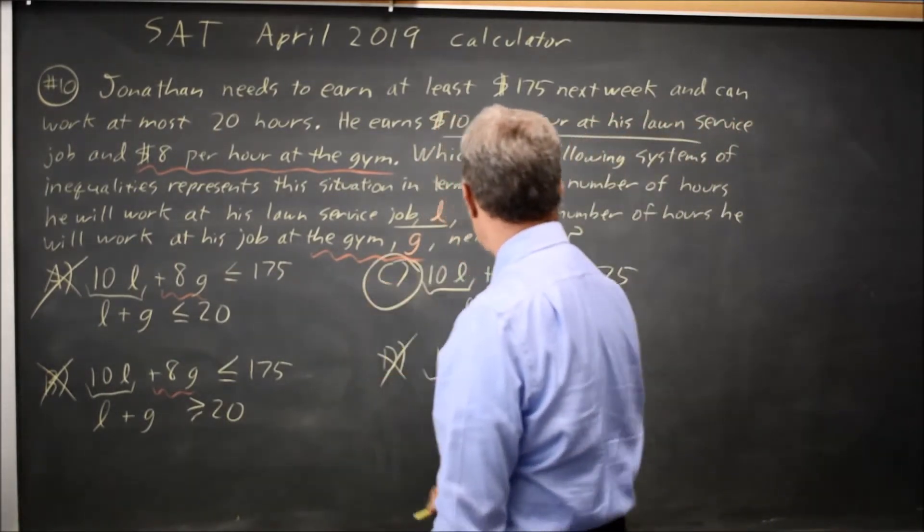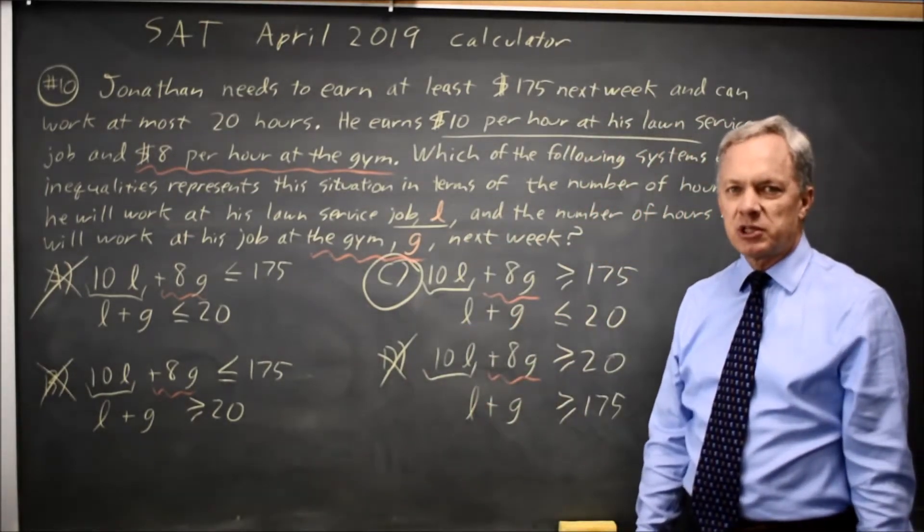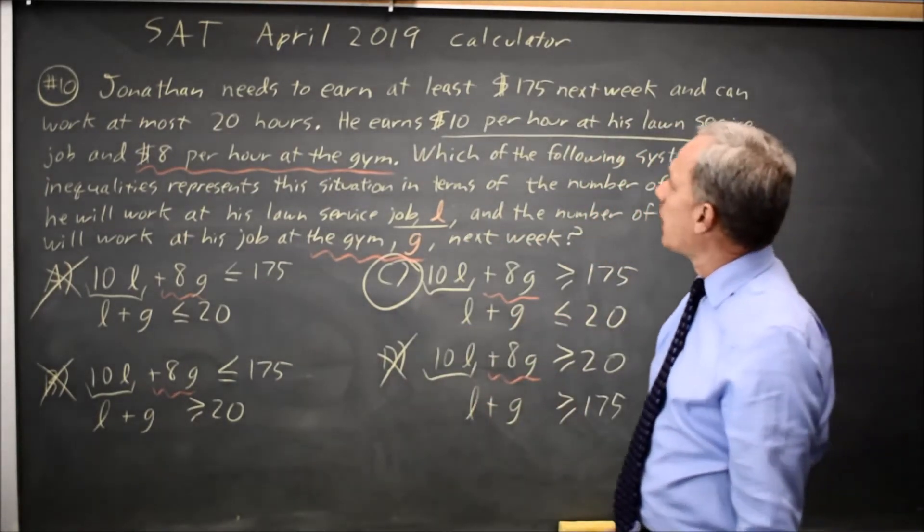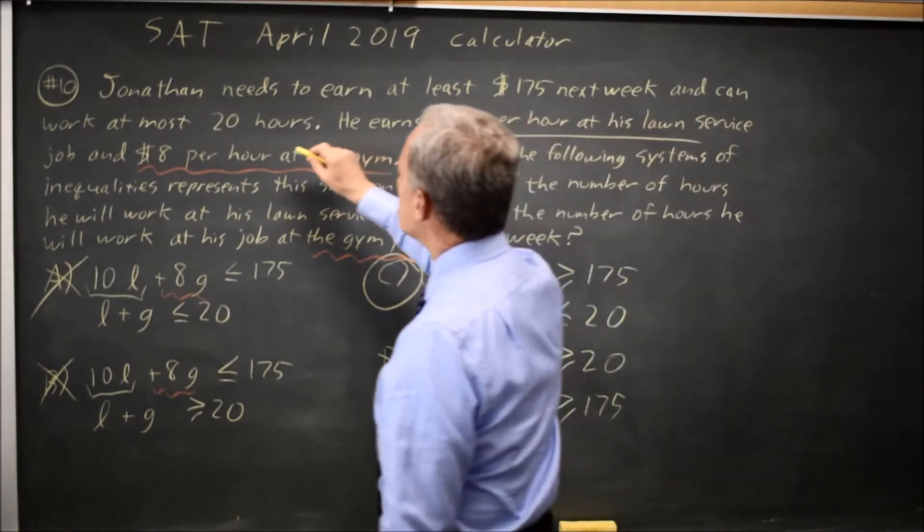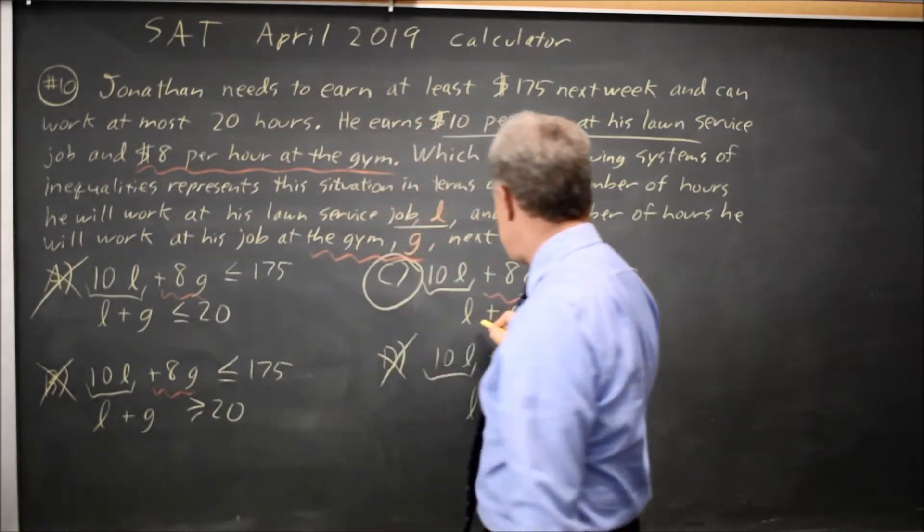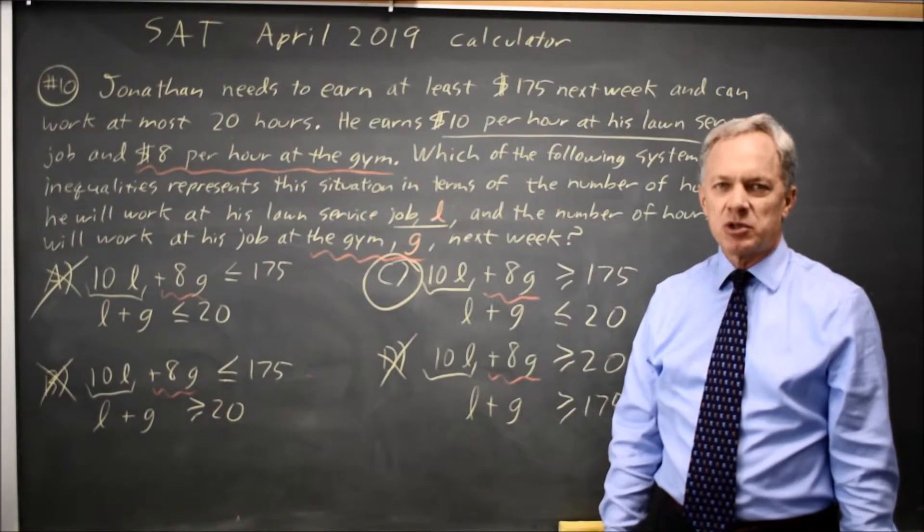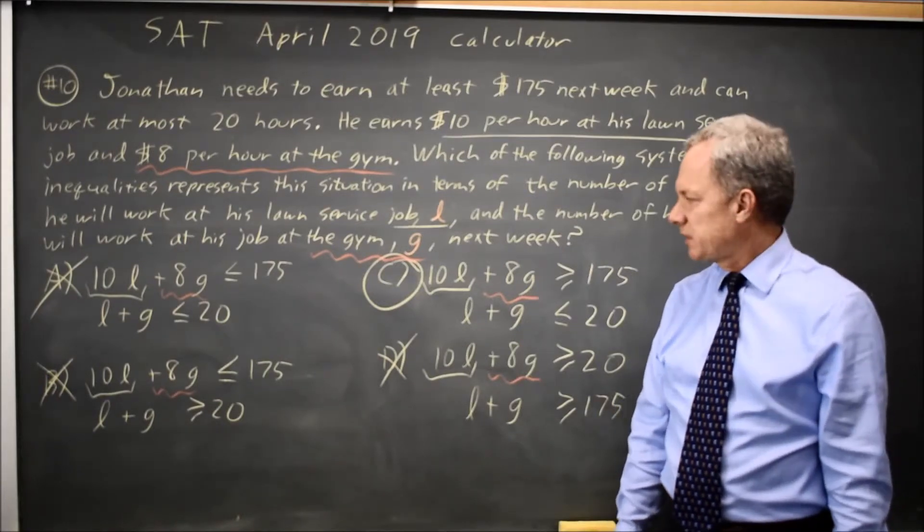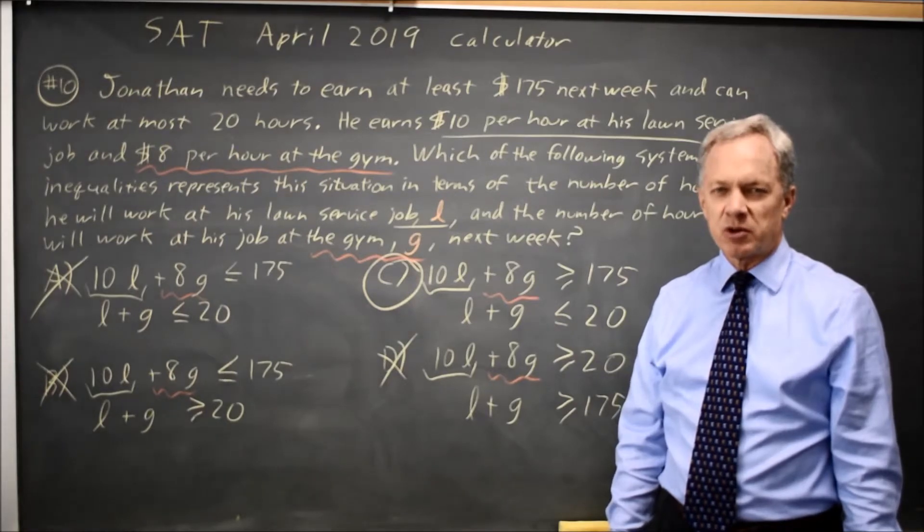The only answer left is C. The second inequality in choice C was L plus G less than or equal to 20, and we said he can work at most 20 hours. L plus G is his hours worked, and this inequality says less than or equal to, which is the same as at most 20 hours. So choice C correctly matches this word problem for a system of inequalities.